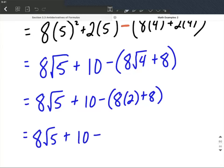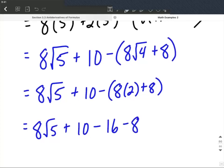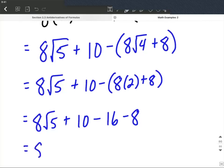Now, if you're okay with it, I'm going to go ahead and distribute that negative from the outside, as well as do 8 times 2 makes 16, and then distributing that negative to that 8, it's going to be minus 8 at the end. We can combine our like terms and say 10 - 16 + 8 is going to work out to be -14.